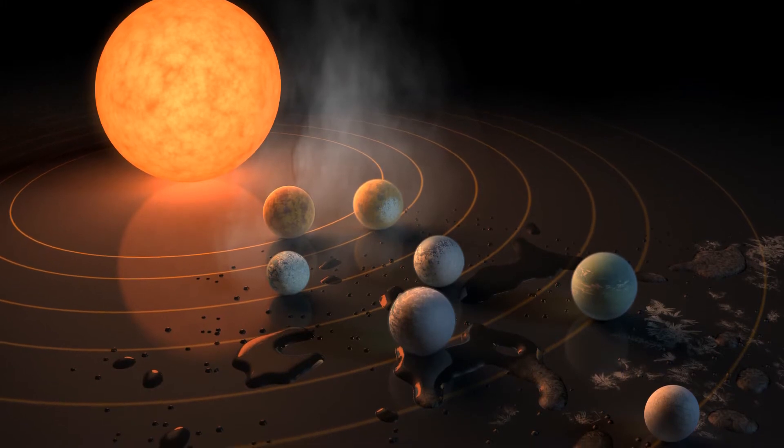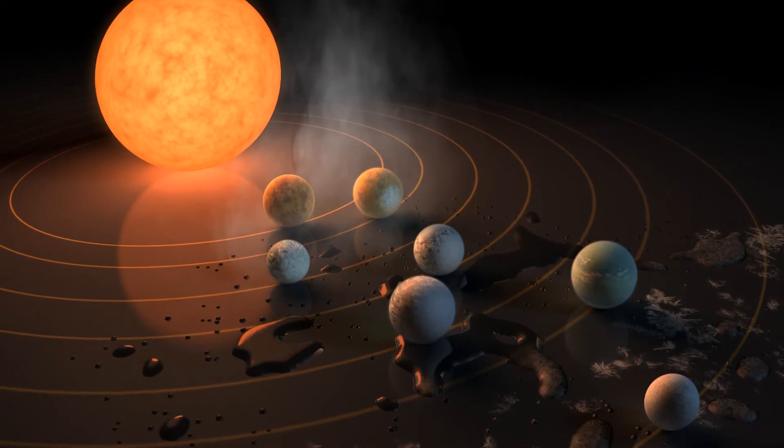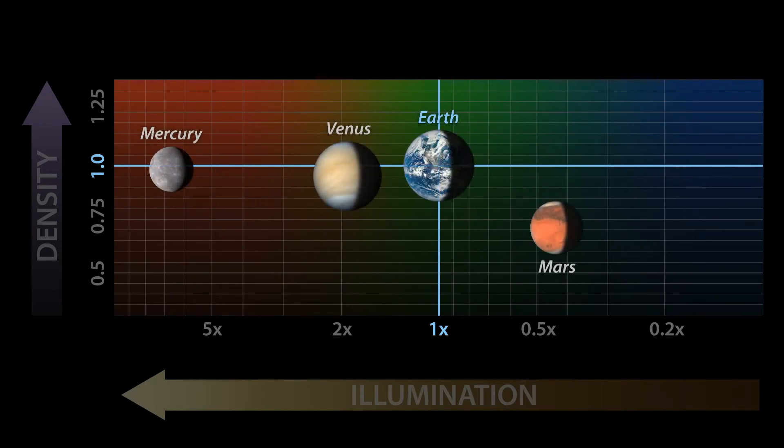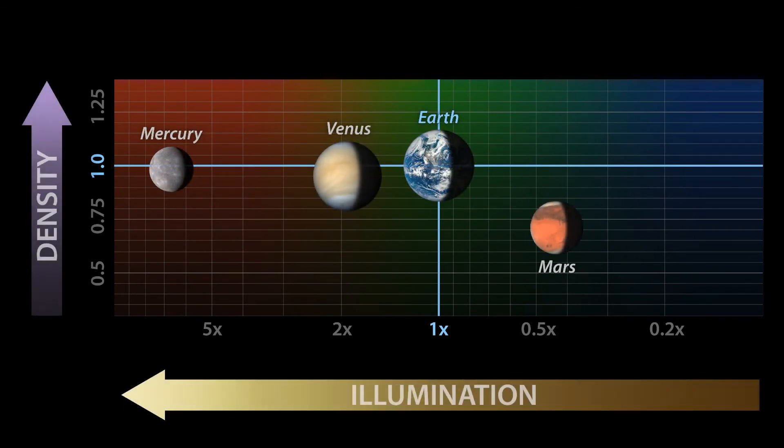So, what does this tell us about the TRAPPIST-1 system? To start, let's see how the rocky planets in our own solar system stack up by size, density, and solar illumination.